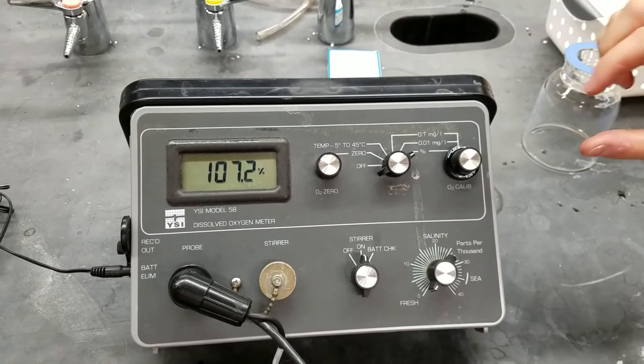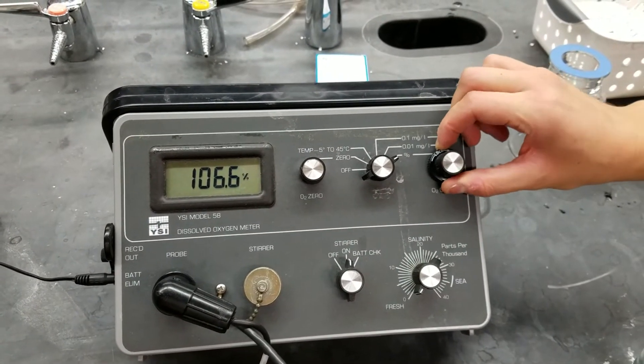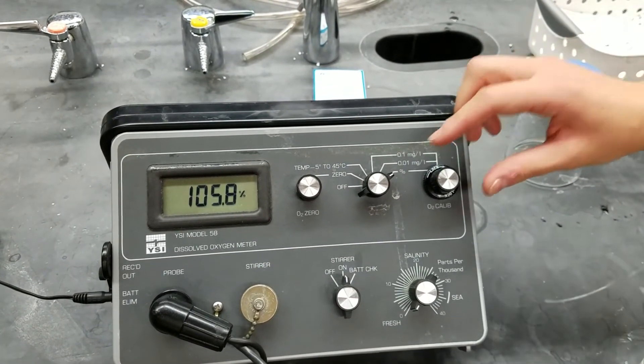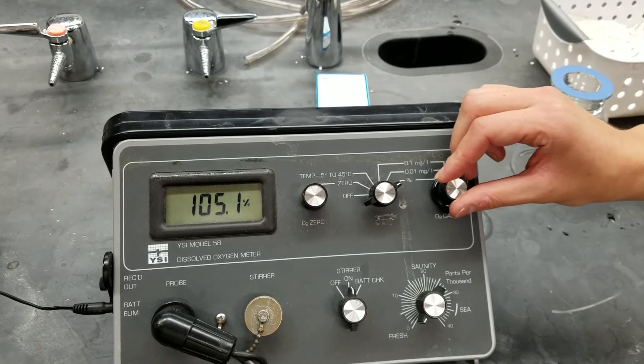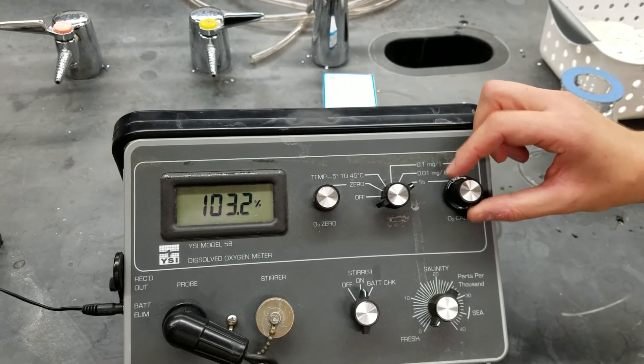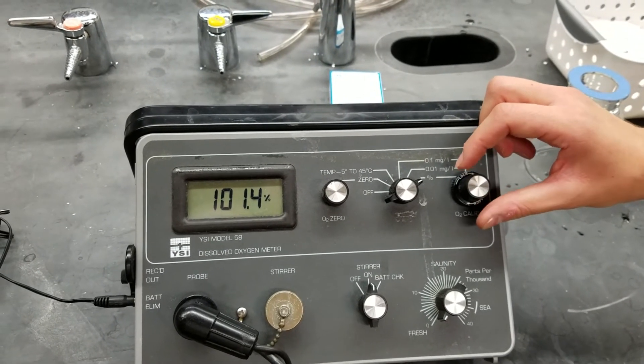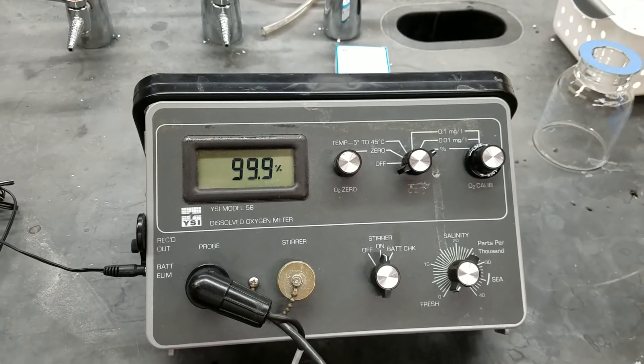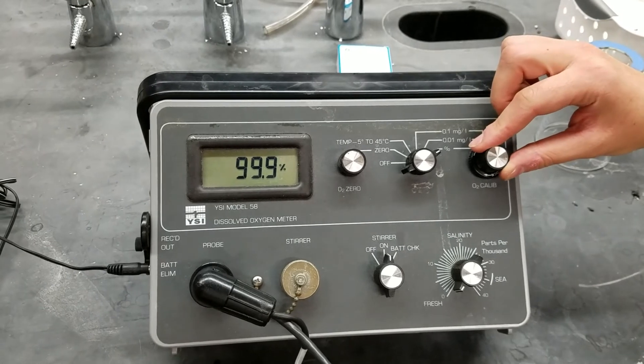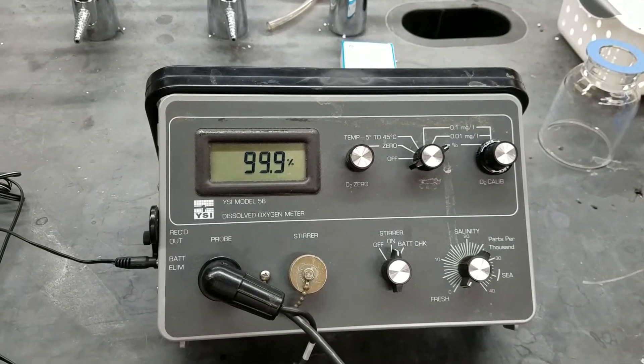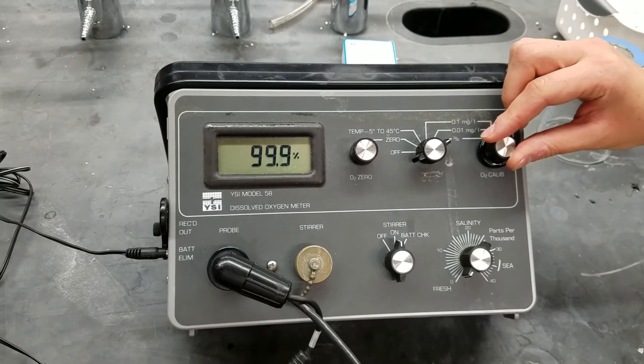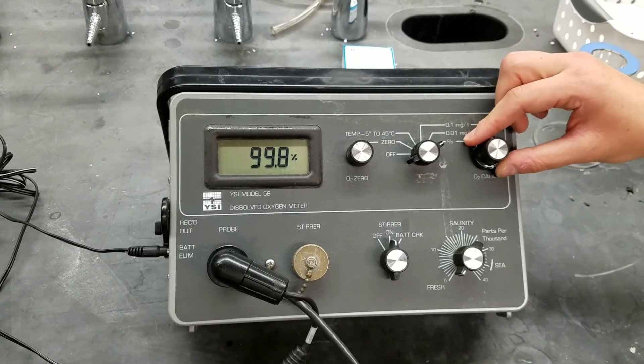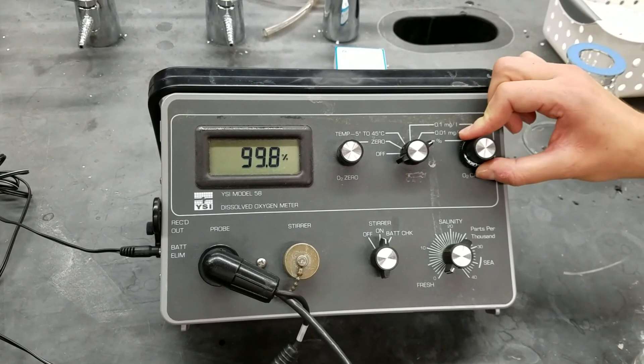And so the way we shift that is we come over to this knob, you have to unlock it first by shifting it that way. And then you turn this top part of the knob until you hit 100%. And then you lock this again.